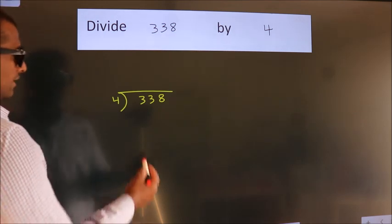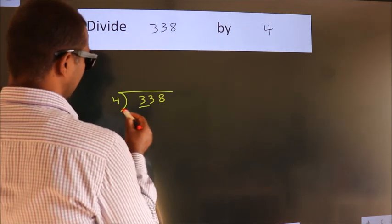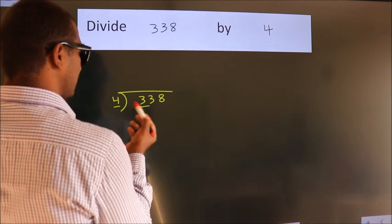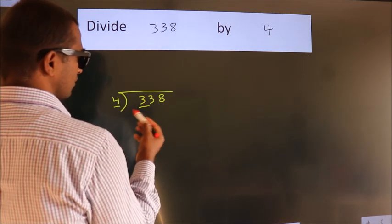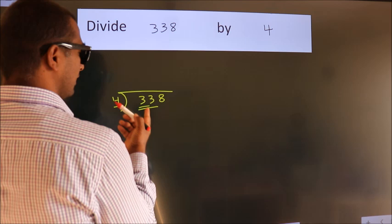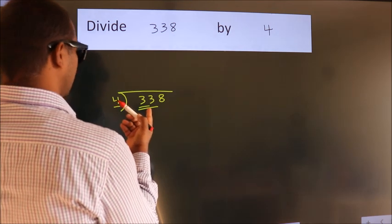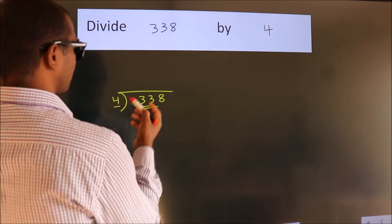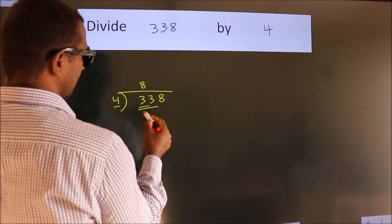Next, here we have 3, here 4. 3 is smaller than 4, so we should take 2 numbers. 33. A number close to 33 in 4 table is 4×8=32.